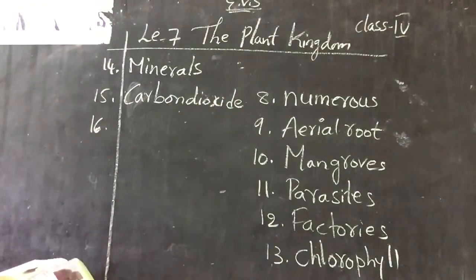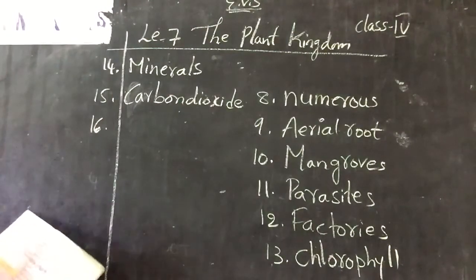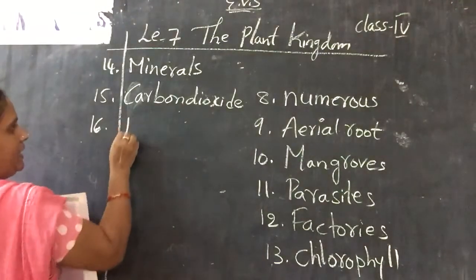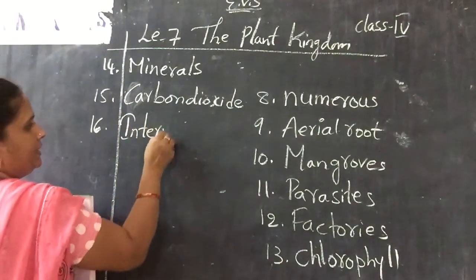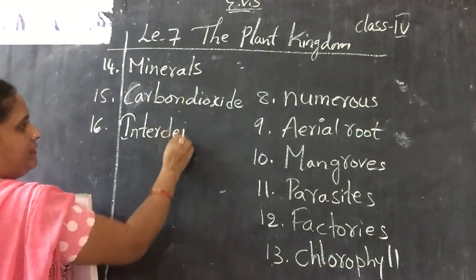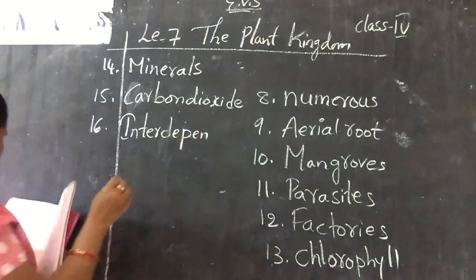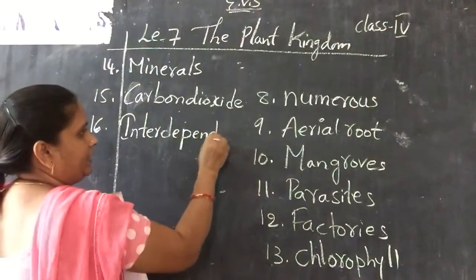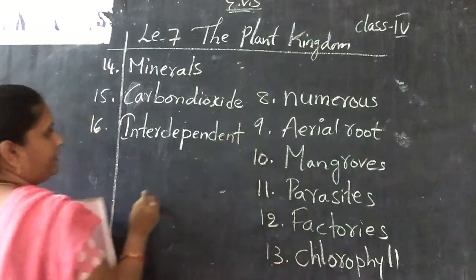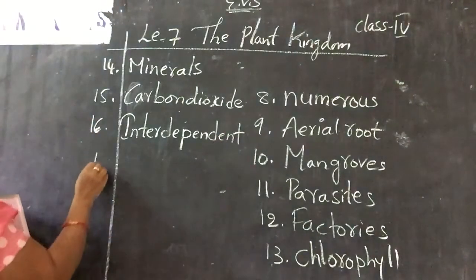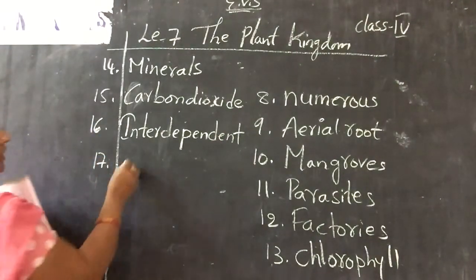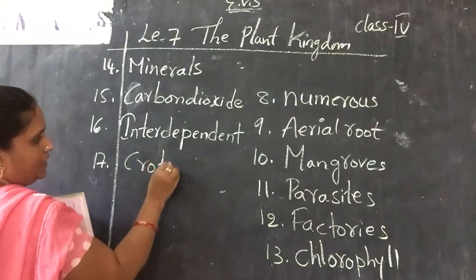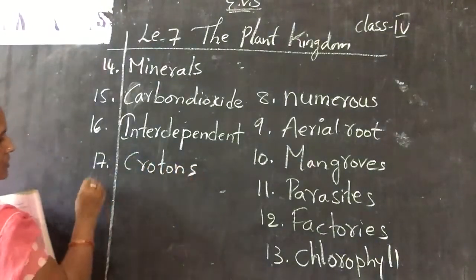Sixteenth one: interdependent — I-N-T-E-R, inter; D-E-P-E-N-D-E-N-T — interdependent. Seventeenth one: protons — C-A-O-T-O-N-S — protons.